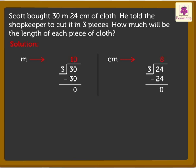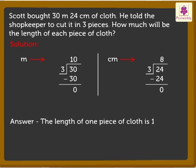Look, we found the answer. The quotient is 10 meters 8 centimeters. Thus, the length of one piece of cloth is 10 meters 8 centimeters.